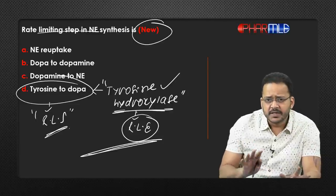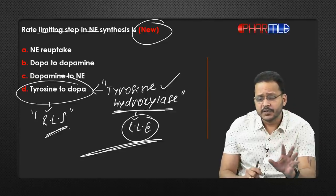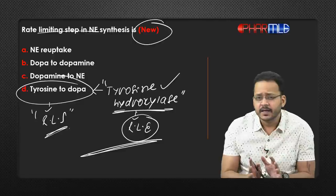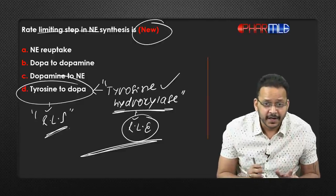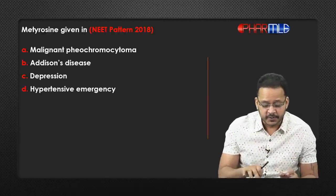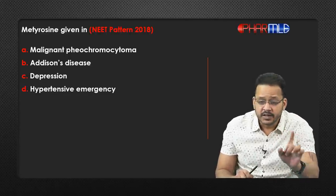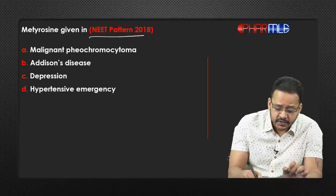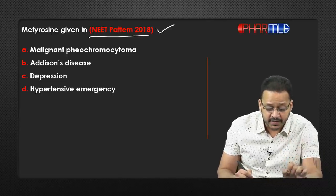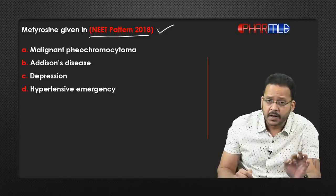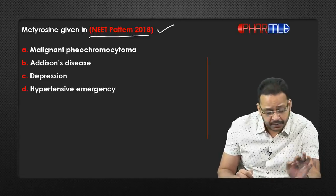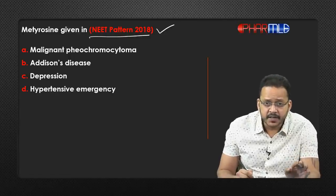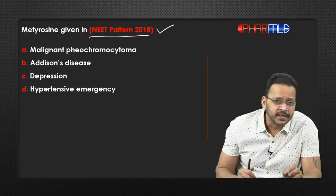That's all they ask in neurotransmitters. They also ask drugs acting upon synthesis of neurotransmitter. The first MCQ is: methylrosine is given in — NEET pattern 2018. Option A: malignant pheochromocytoma. Option B: Addison's disease. Option C: depression. Option D: hypertensive emergency. It's an easy one.